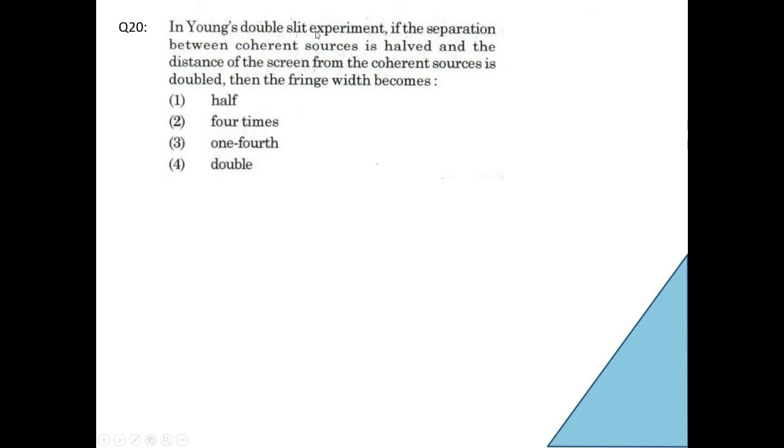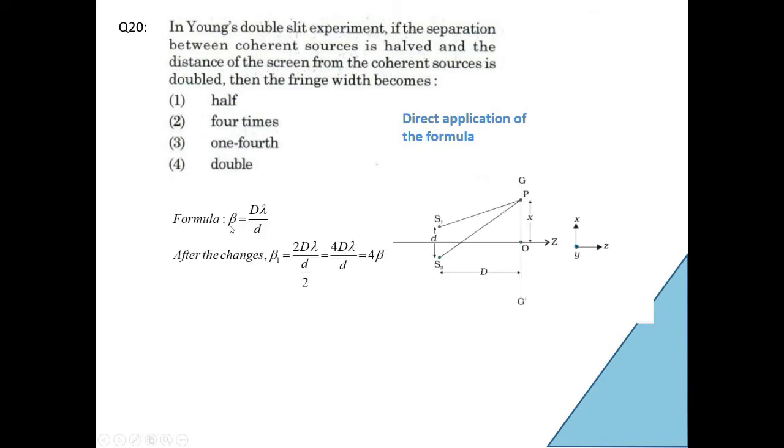Next question. In Young's double slit experiment, if the separation between coherent sources is halved, that means made half, and the distance of the screen from the coherent sources is doubled, then the fringe width becomes: option 1, half; option 2, four times; option 3, one fourth; option 4, double. This application is direct. You have to use the formula. Formula is beta equal to D lambda by d. Beta is fringe width. This is the approximate sketch. Capital D is this distance between the plane of the slits and the screen. Small d is the distance between the slits. Lambda of course is the wavelength.